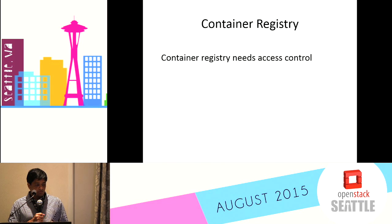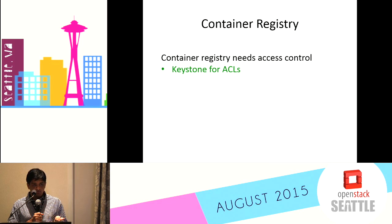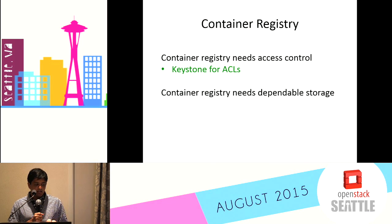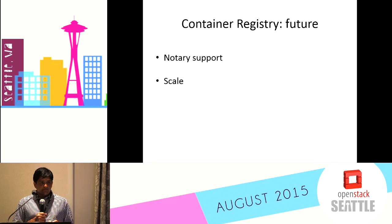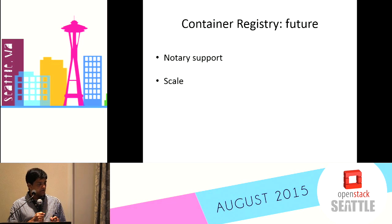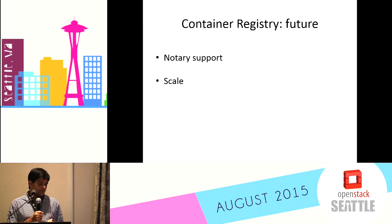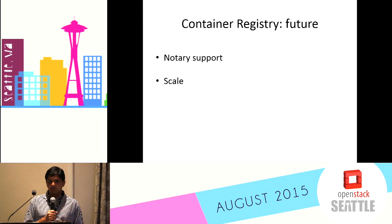Another aspect of our work has been to create a container registry. This requires access control, so we used Keystone again for that purpose. For storage we used Swift, so all the images stored in your Docker container registry actually go into Swift. We also need notary support to ensure the images we are building are signed by the right folks. Notary support was just announced in Docker 1.7, and we are planning to use that. Scale and other aspects will follow.